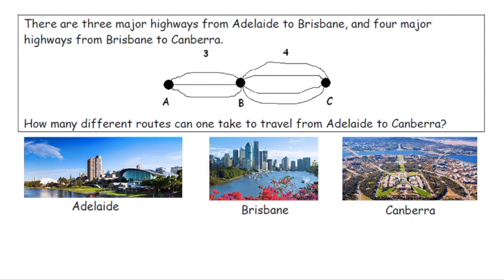Adelaide, Brisbane, and Canberra are three major cities on the continent of Australia. If there are three major highways to get from Adelaide to Brisbane, and there are four major highways to get from Brisbane to Canberra, how many different routes could one take to travel from Adelaide to Canberra?